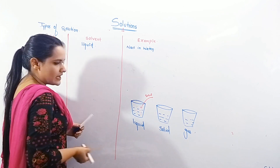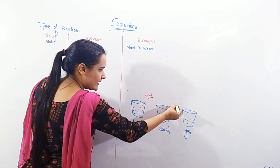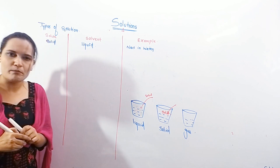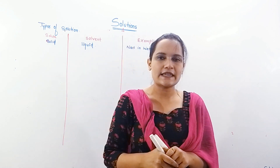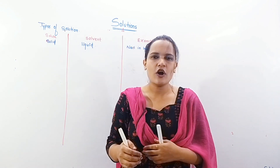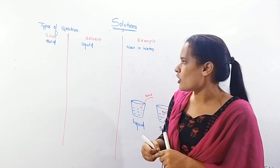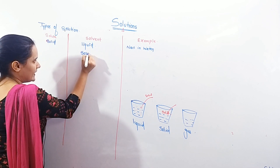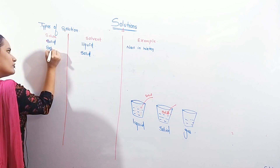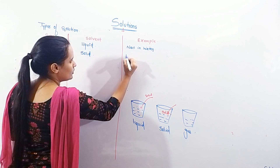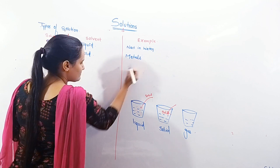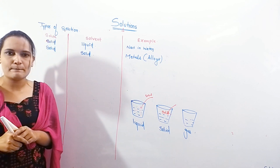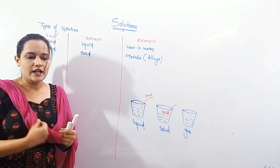In the second case, we add solid in solid. When you mix two metals together, you get an alloy. So alloy is an example of solid in solid. Whatever different types of alloys are present, they are all examples of solid-in-solid solutions.